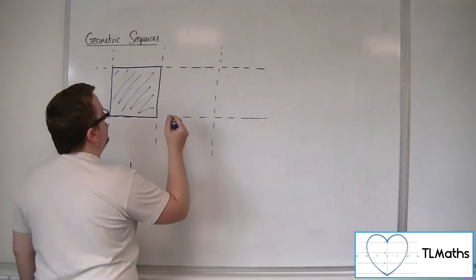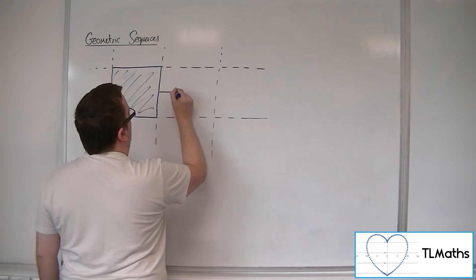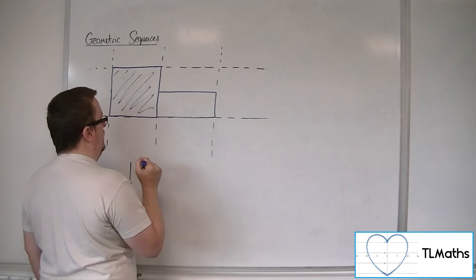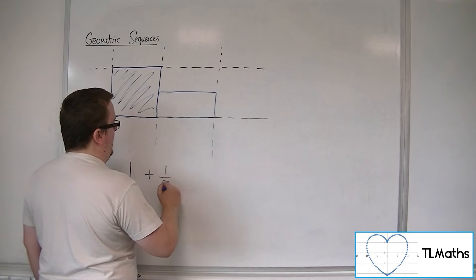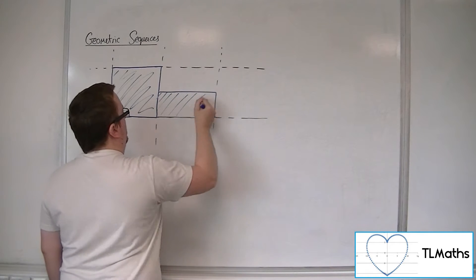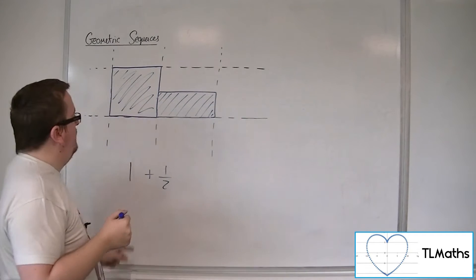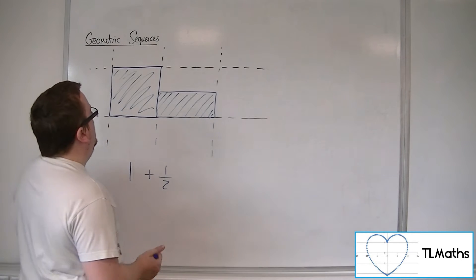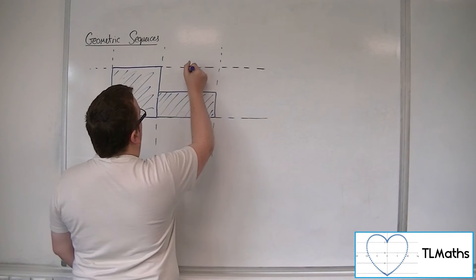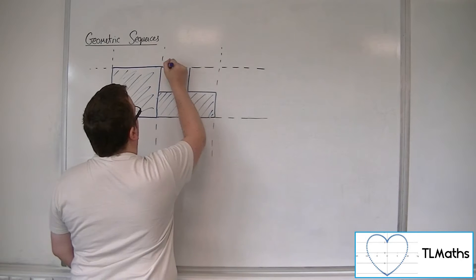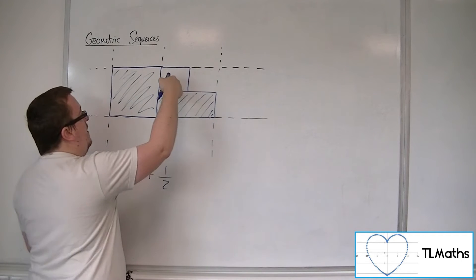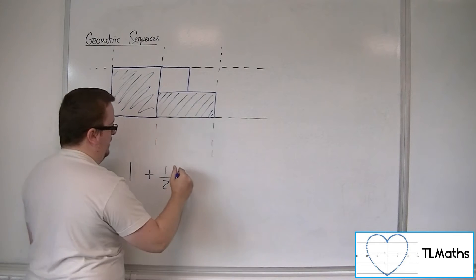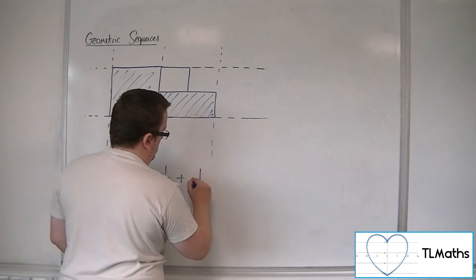Now, if I then shaded in half of this square, then I would be adding on one half. So I've now got 1 and a half in area. If I then shade in half of what I've got left, that would be a quarter — that's half of a half, so a quarter.